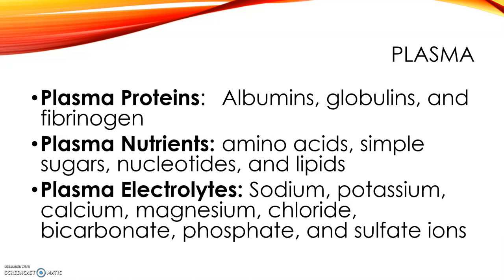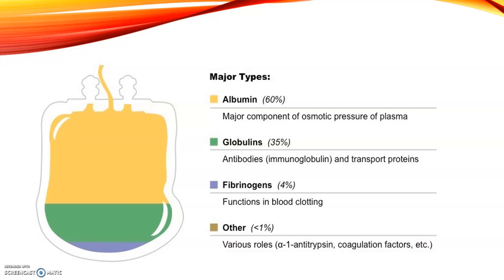The plasma electrolytes are absorbed from the intestine or released from cellular metabolism processes. Examples include sodium, potassium, calcium, magnesium, chloride, bicarbonate, phosphate, and sulfate ions. Their main function is in blood clotting or blood coagulation. This diagram shows the plasma component of the blood broken down into the plasma proteins — albumin, globulins, and fibrinogens — and the other nutrients and electrolytes.